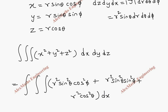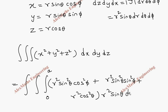The correct integration order is: first with respect to r, which ranges from 0 to 2a since it is a sphere; then with respect to θ, which ranges from 0 to π; and finally with respect to φ, which ranges from 0 to 2π.